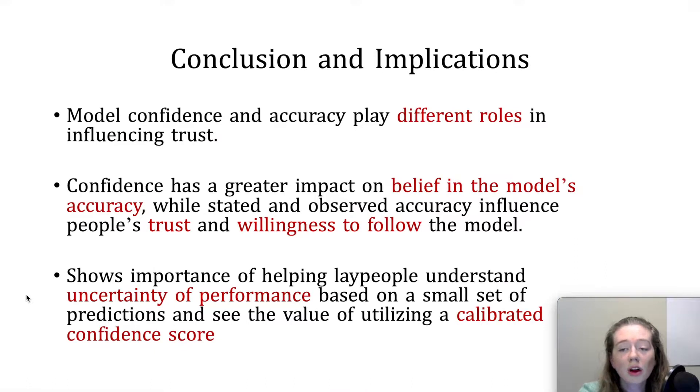Overall, our results suggest that model confidence and model accuracy play different roles in influencing people's trust in a machine learning model. Confidence has a greater impact on belief in the model's accuracy, while stated and observed accuracy influence people's trust and willingness to follow the model. We conjecture that this may be because when both accuracy and confidence are presented, people consider accuracy as a fact, but deem confidence as only an estimate.